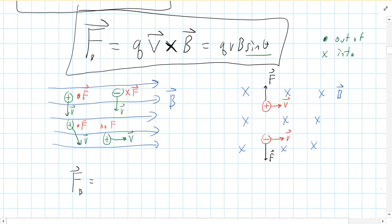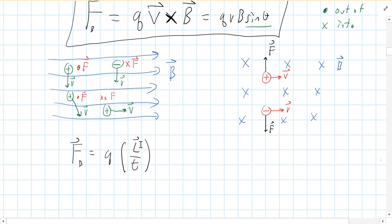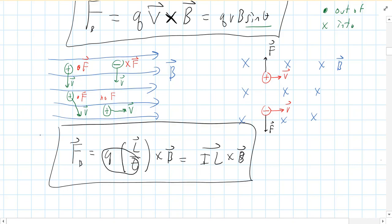So in that case, the force magnetic will be Q velocity. Well, if you have charge moving through a wire, let's say, that would be L, the length of the wire, over time. That's your velocity. So how far did the charge get in a certain amount of time? And then cross B. And then we're going to rearrange here. Q divided by time is current. So you get IL cross B. So that's the version of the Lorentz force equation you use for a current carrying wire.